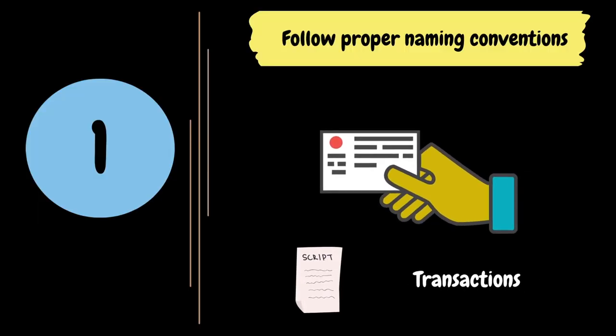In every organization, they will have some naming standards defined for scripts, transactions, etc. Following proper naming conventions helps other team members easily understand and maintain scripts in the future. It will also help during analysis. For example, if we use the same transaction name called 'transfer' across multiple scripts, it becomes challenging to distinguish the problematic script in the results. So always use unique names to avoid mixing results within the results files.